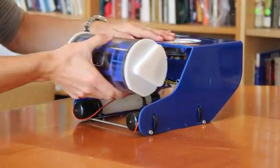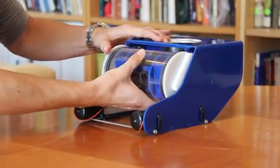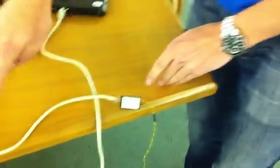The electronics for the ROV are contained in a single acrylic tube. Inside this tube, an onboard computer hosts live video from a webcam and sends commands to an Arduino microcontroller that interfaces with the motor controllers and other hardware on board.